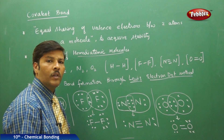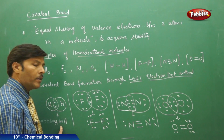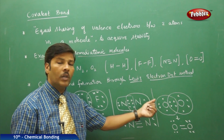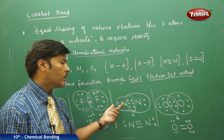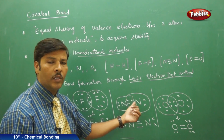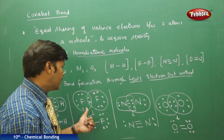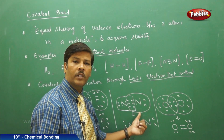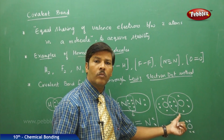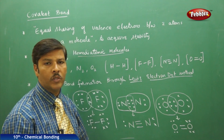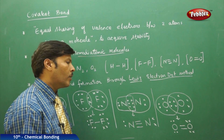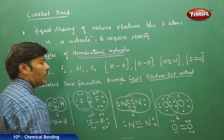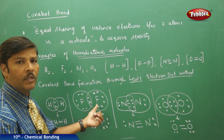In all cases except hydrogen, the three molecules — fluorine, nitrogen, and oxygen — through equal sharing of valence electrons have all acquired octet stability. The difference is: in F₂ there is a single covalent bond, in N₂ there is a triple bond, and in O₂ there is a double bond. These molecules are the best examples of homo diatomic molecules because the atoms within each molecule are the same.